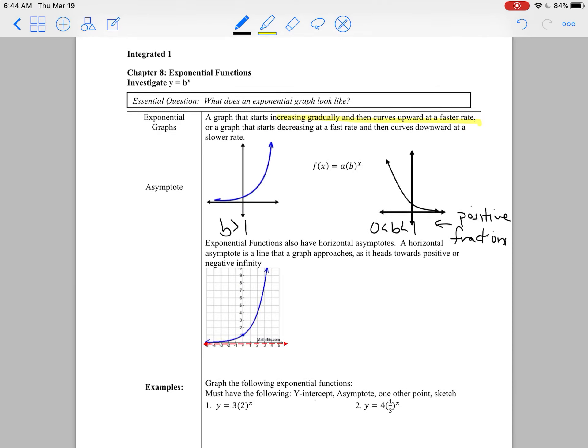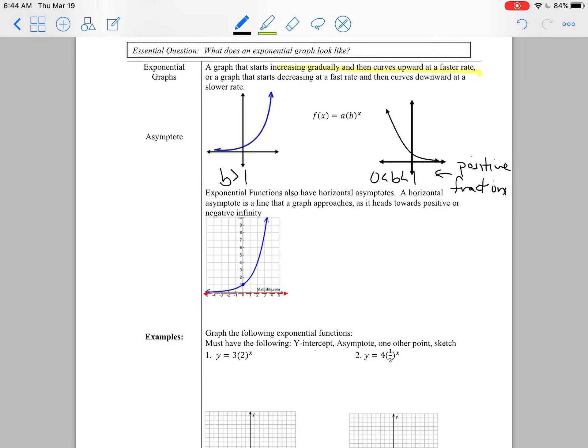Now exponential graphs also have horizontal asymptotes. That asymptote is a line that the graph approaches, and it doesn't matter whether it's increasing or decreasing. It's always getting close to that line, but it never crosses. Like where this one is decreasing right here, it's always getting close to that imaginary line. It's never going to hit it. This is the asymptote right here.